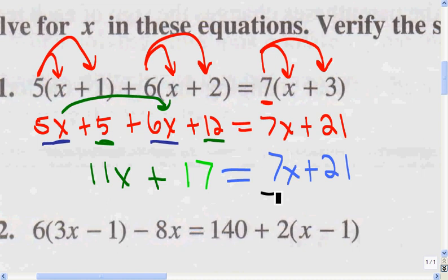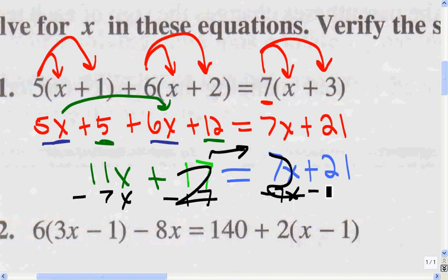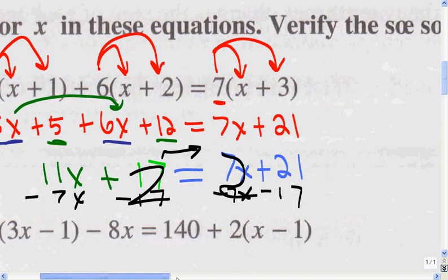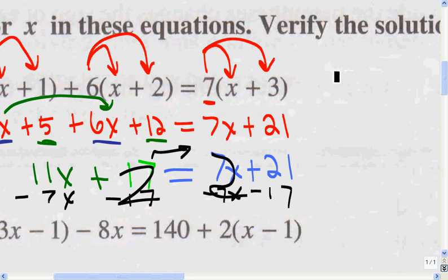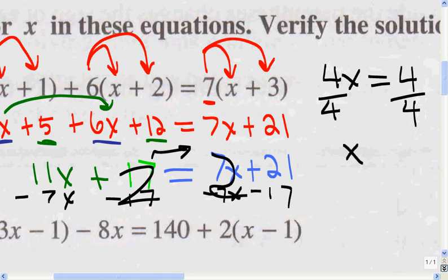So if I move the 7x, I've got to subtract 7x from both sides. If I move the 17 over, I'm going to subtract 17 from both sides. Remember: what you do to one side, you have to do to the other for the equation to stay true. So 11x minus 7x is 4x, and 21 minus 17 is 4. Now I divide by the coefficient of x, which is 4. That gives me x equals 1 because 4 divided by 4 is 1.